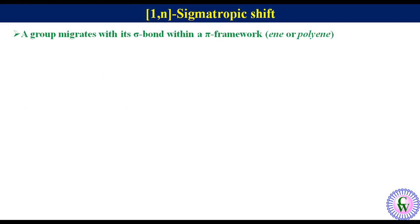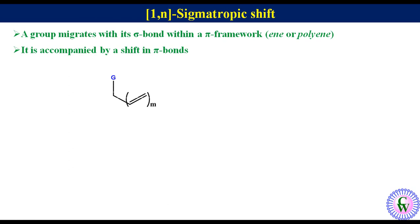In a Sigmatropic Shift, a group migrates with its sigma bond within a pi framework like ene or poly-ene. The migration is accompanied by a shift in pi bonds. Suppose we have a system where M equals 1, 2, 3, 4, etc. During a Sigmatropic Shift, group G with its sigma bond will migrate to a carbon, and this migration will be accompanied by shifting of pi bonds to generate a rearranged product.